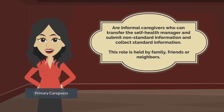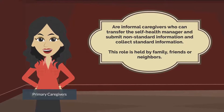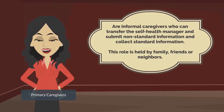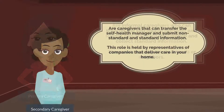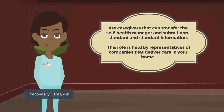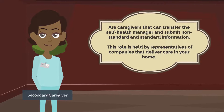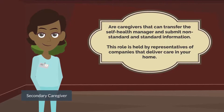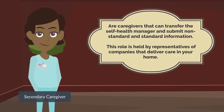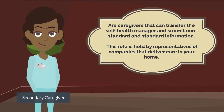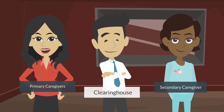Primary caregivers are informal caregivers who can transfer the self-help manager, submit non-standard information, and collect standard information. This role is held by family, friends, or neighbors. Secondary caregivers can transfer the self-help manager and submit both non-standard and standard information. This role is typically held by representatives of companies that deliver care in your home. These are the three roles that everyone will play as defined by Patient Better.